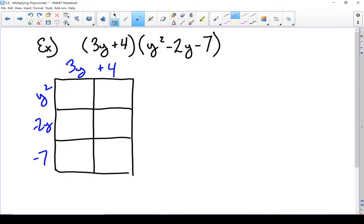As I multiply things out, y squared times 3y gives me 3y cubed. Y squared times 4 gives me 4y squared. 3y times negative 2y gives me negative 6y squared. Negative 2y times 4 gives me negative 8y. 3y times negative 7 gives me negative 21y. And last, minus 7 times 4 gives me negative 28.